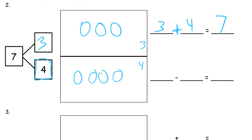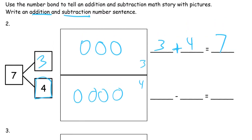We can also start with seven and subtract. The four is the part we knew about in the beginning. If we had seven and took away the four we knew about, we'd have three left. So seven minus four equals three. Those are the parts of seven.